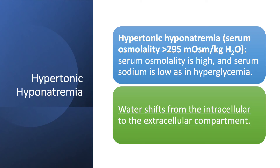Hypertonic hyponatremia occurs when serum osmolality is more than 295 milliosmoles per kilogram of water. The most important example is hyperglycemia. When someone has severe hyperglycemia, the glucose pulls water from the cells — water shifts from the intracellular space to the extracellular compartment — and that causes hyponatremia. The osmolality is high because of the high sugar. This is a less common situation.